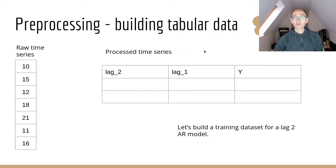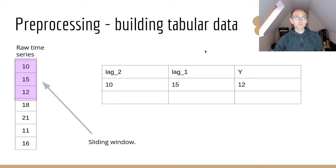Let's create our first window. Here's our sliding window, it's length three and the window size for our x data is of length two. When we put that window on our time series we create a new entry for our tabular data, so our lag two value is 10, our lag one value is 15, and our y value is 12.